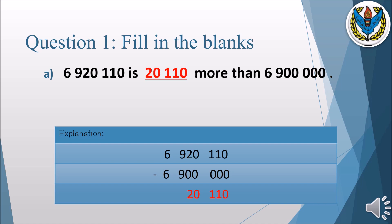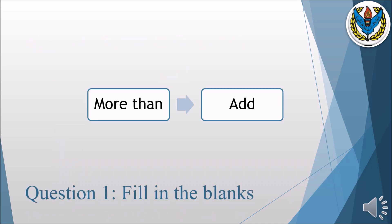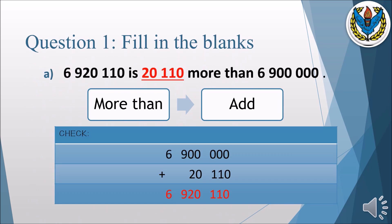You can cross-check the answer: when we add twenty thousand one hundred and ten to six million nine hundred thousand, we get six million nine hundred and twenty thousand one hundred and ten. So your answer is correct.